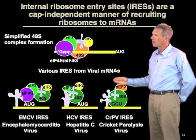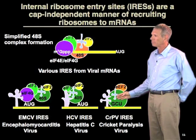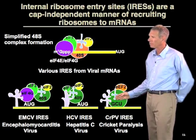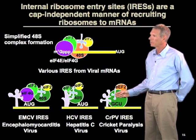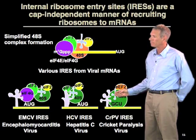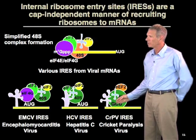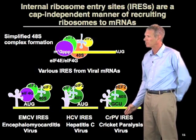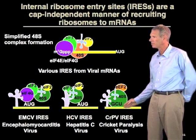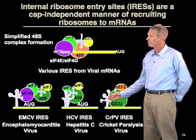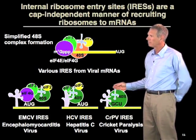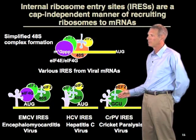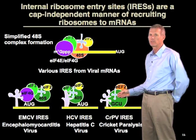These are RNA structures which have been most described in viral RNAs. In the most extreme version, they interact directly with the ribosome. This is what's called an IRES from the cricket paralysis virus, which has a specific RNA structure that binds directly to the small subunit of the ribosome, recruiting it to the message and allowing initiation of translation.